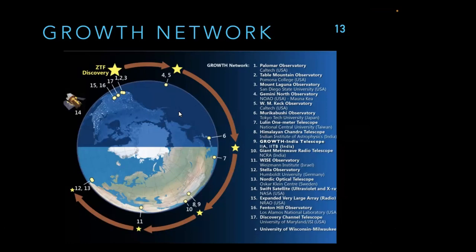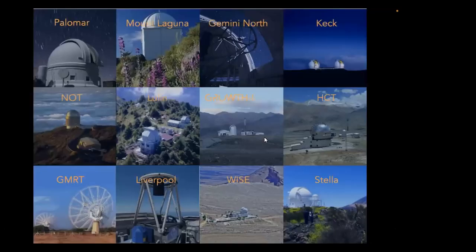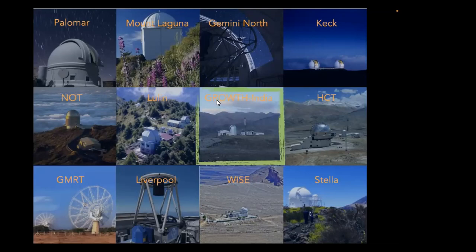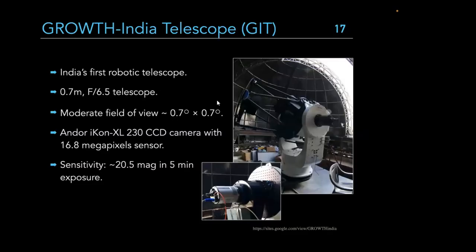This provides very continuous coverage and early-time data, which is crucial for many transients. The picture shows many of the observatories in the GROWTH network. I mainly work on one particular telescope, so over the next few slides I'll use it as an example of why follow-up telescopes play a crucial role beyond what survey telescopes like ZTF can do alone.